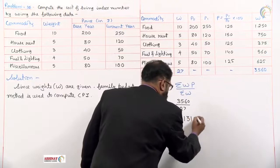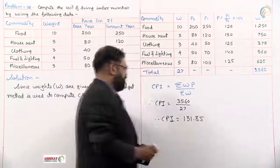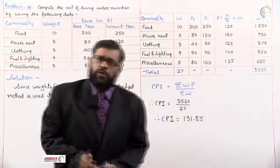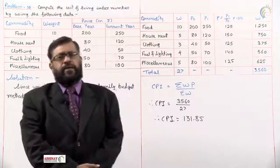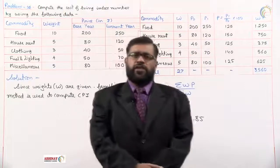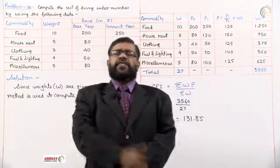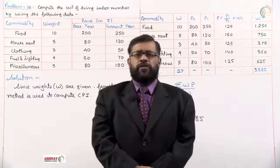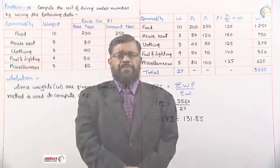That's all. When family budget method is used, this is the way how we do it. So in this session we have covered problem 36 on consumer price index number. In the next session we shall take problem number 37 on consumer price index number. Thank you.